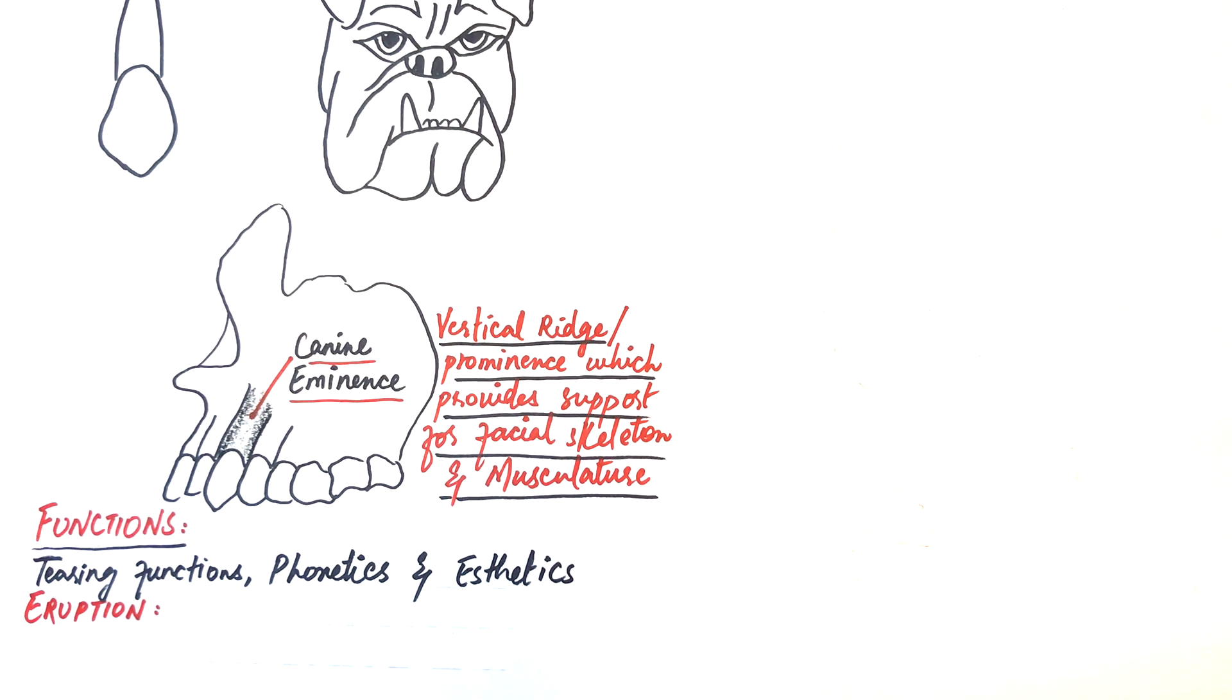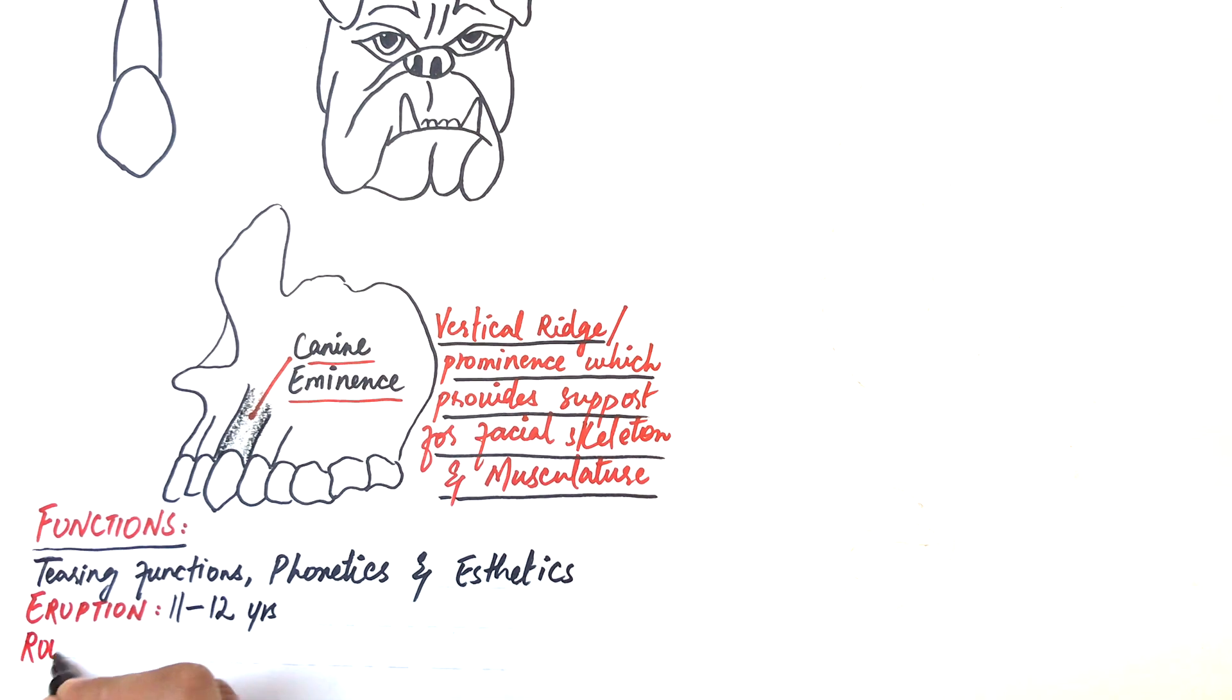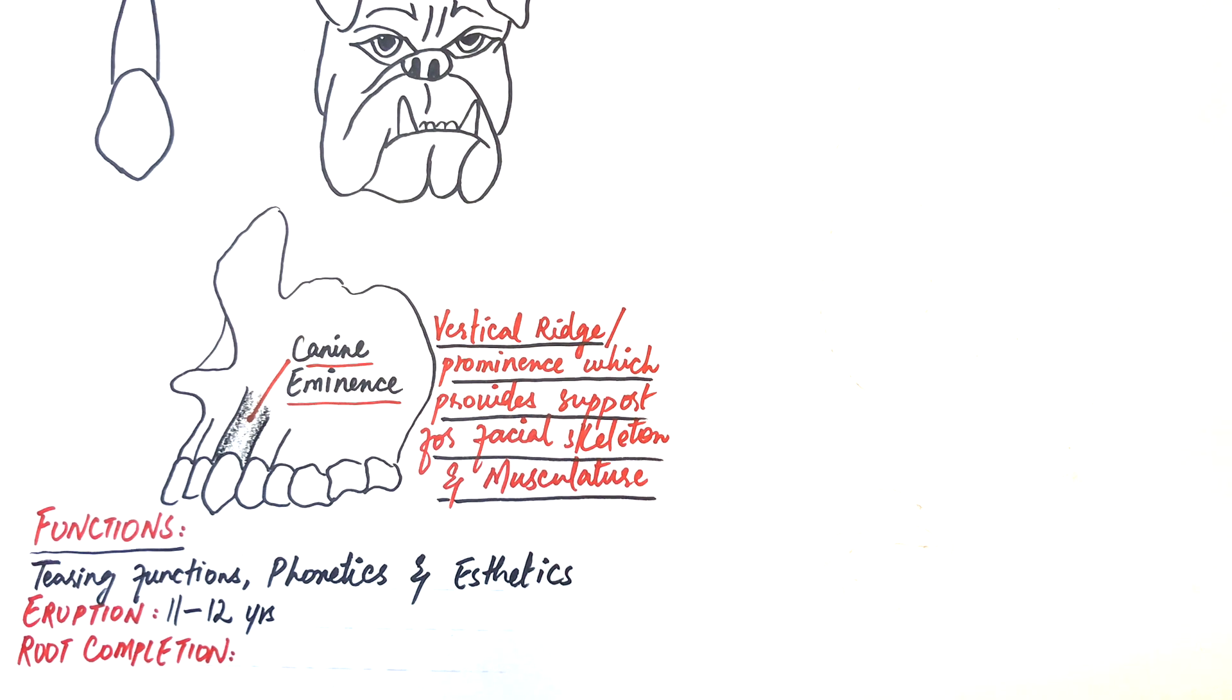The maxillary canines erupt at the age of 11 to 12 years and their root is completed at the age of 14 to 15 years.